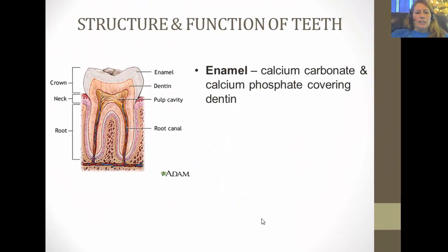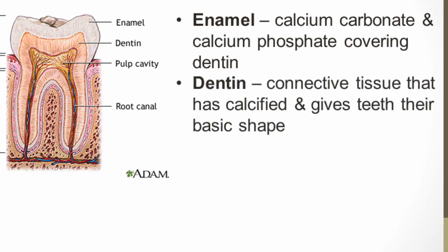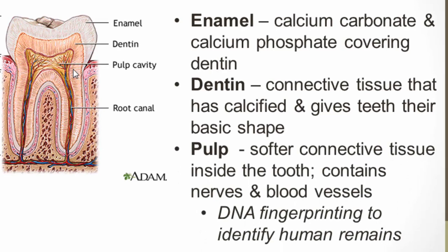Looking at the layers that make up the tooth: the enamel is a very hard outer covering — the white portion — made of calcium carbonate and calcium phosphate, which makes it extremely hard. Eating very acidic foods can thin the enamel and make teeth sensitive. The dentin is a calcified connective tissue beneath the enamel, not as hard, and gives the tooth its basic structure and shape. The pulp is the softest layer, containing nerves and blood vessels — it's where DNA would be extracted. A cavity that reaches the pulp is why tooth pain can be so intense.